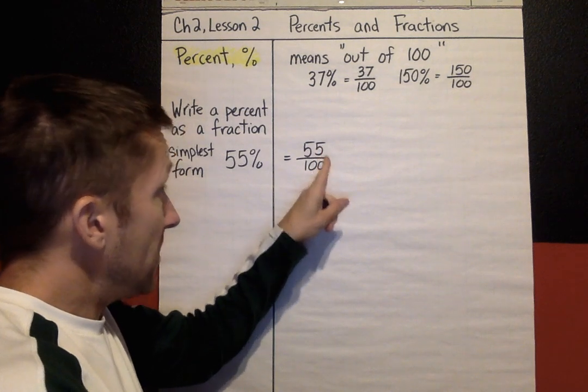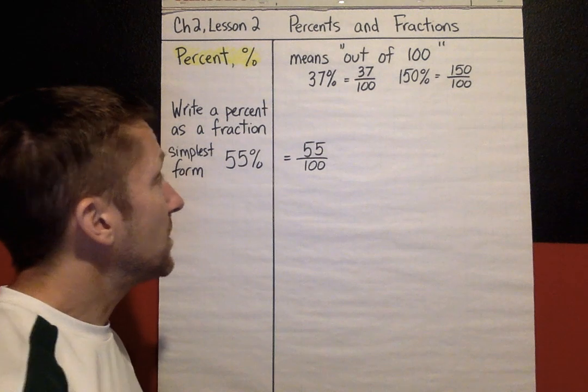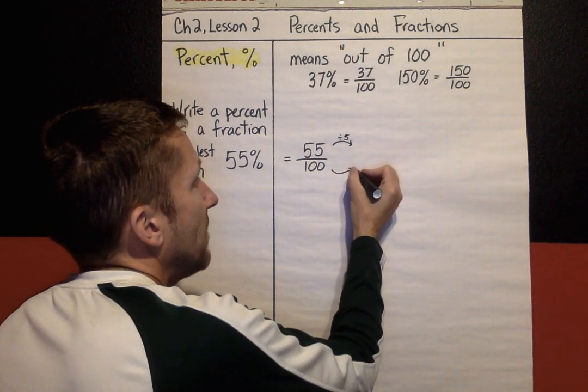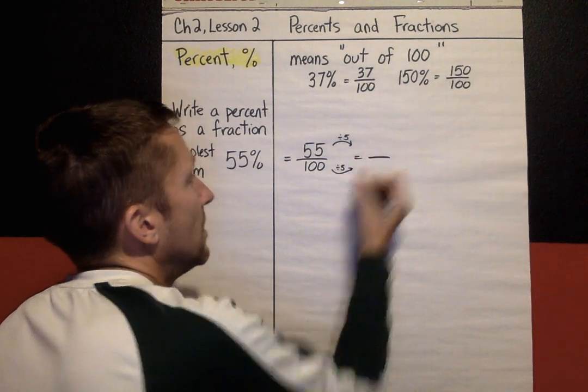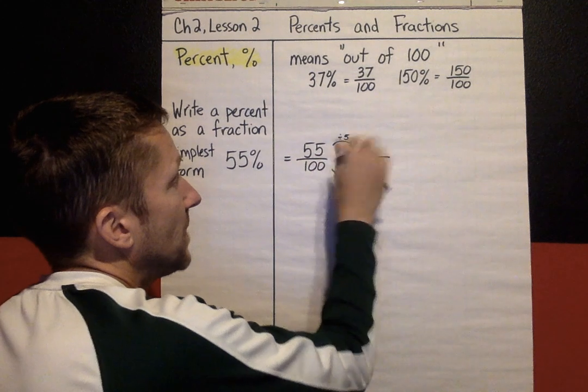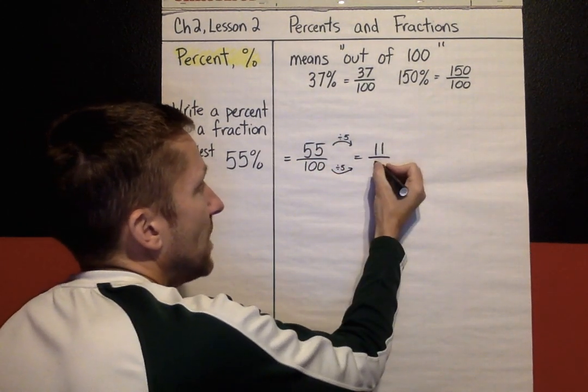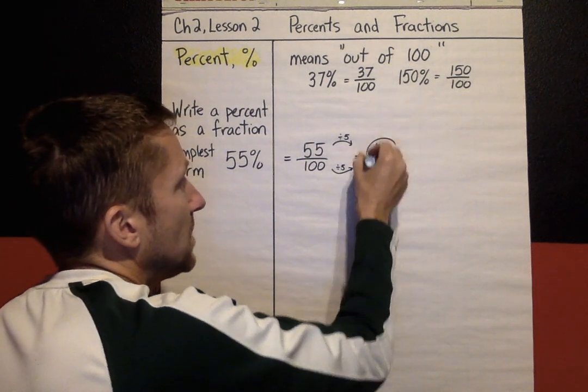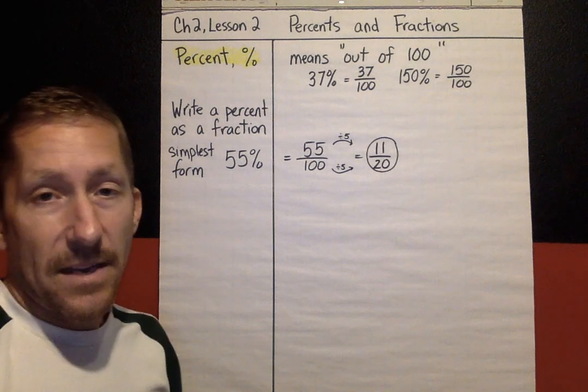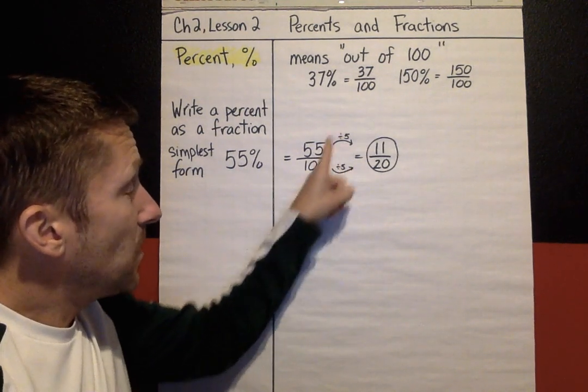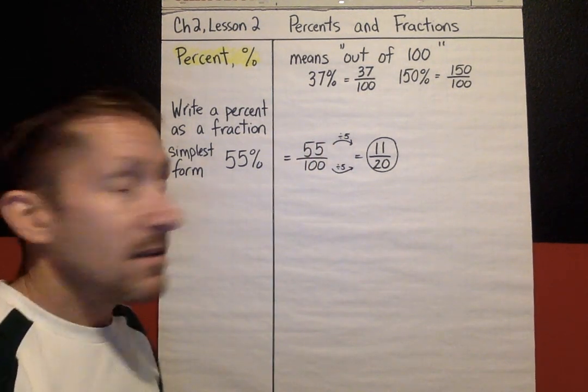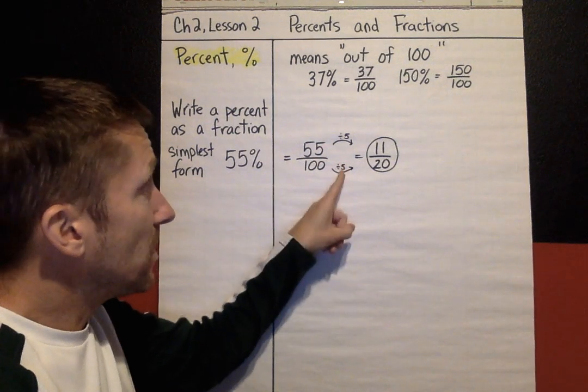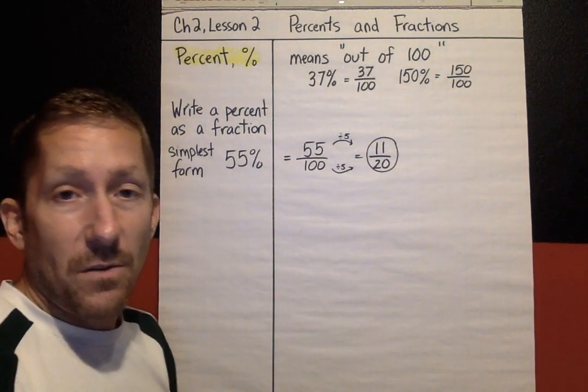If a number ends in 5 and 0, if you skip count by 5s, hopefully you recognize that 5 is going to go into both of these. We're going to divide 55 by 5 and we're going to divide 100 by 5. That is going to make our simplified fraction 55 divided by 5 is 11, 100 divided by 5 is 20. So our simplified percent to fraction answer would be 11/20. 55% is the same thing as 11/20. Hopefully you're really starting to notice that this little pattern right here is a recurring theme that we've seen really since we've started math this year. If you divide by the same number or you multiply by the same number, these fractions or ratios stay the same.